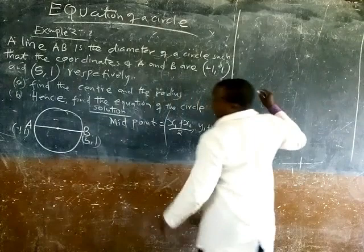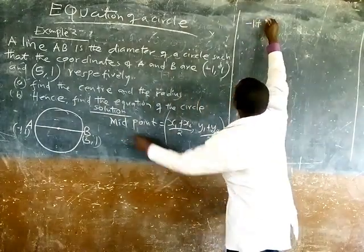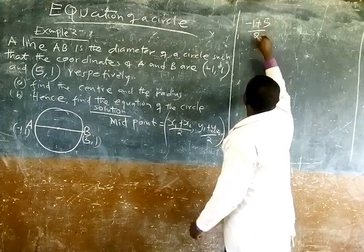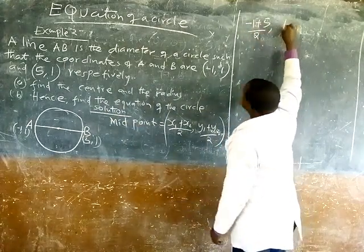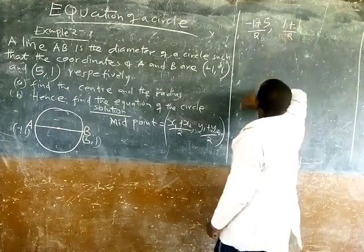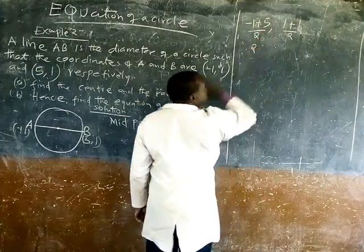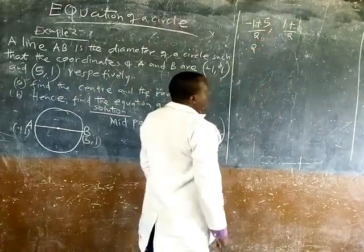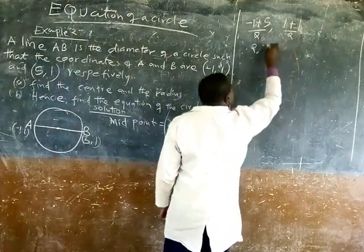Now, our first X is negative 1 plus 5 divided by 2, comma, 1 plus 1 divided by 2. So here we will have 4 divided by 2, comma, 1 plus 1, 2 divided by 2.